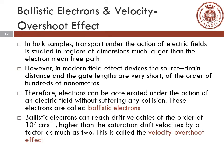Now we will see the concept of ballistic electrons and the velocity overshoot effect. In bulk samples, that is in 3D semiconductors, transport under the action of electric fields is studied in regions of dimensions much larger than the electron mean free path. But in modern field effect devices, the source-drain distance and gate lengths are very short, of the order of hundreds of nanometers. Therefore electrons can be accelerated under the action of an electric field without suffering any collision. These electrons, which do not suffer any collisions, are called ballistic electrons. Ballistic electrons can reach drift velocities of the order of 10^7 cm/s, which is higher than the saturation drift velocity by a factor of as much as 2. This effect is called the velocity overshoot effect.